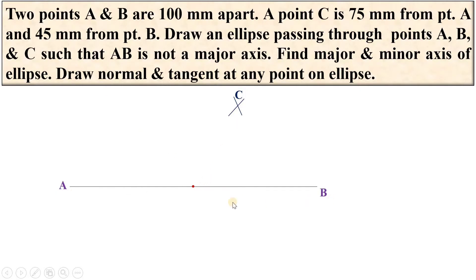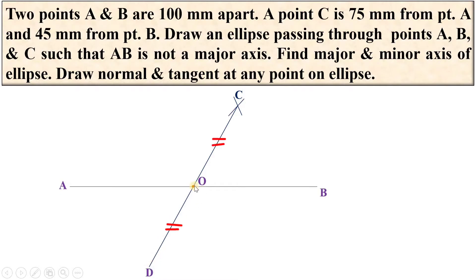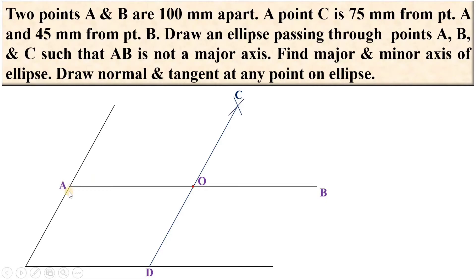Now mark the midpoint of AB and name it O. Join OC and extend it such that AB is the bisector of this line. Mark point D such that OD is exactly equal to OC. Next, draw the parallelogram passing through points A, D, B and C with the help of a roller scale.